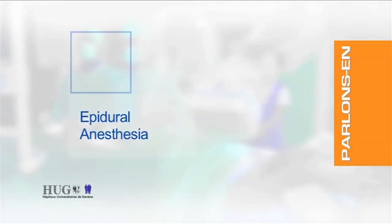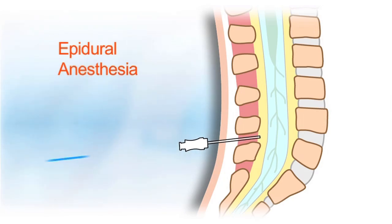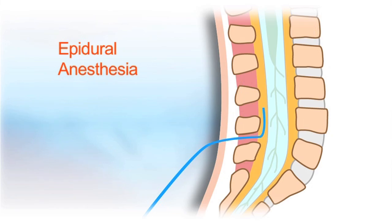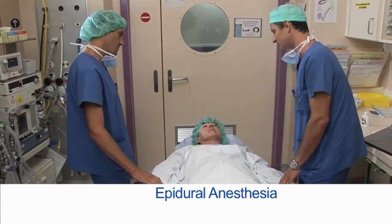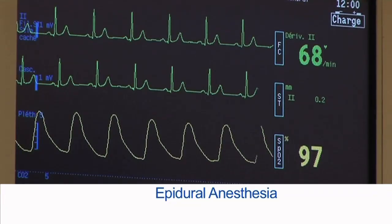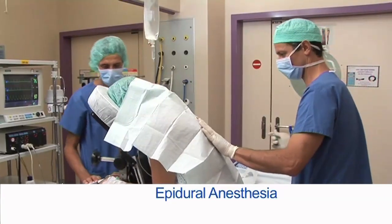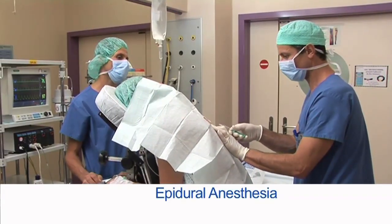In epidural anaesthesia, a local anaesthetic is injected into the epidural space. A very thin flexible tube known as a catheter is inserted through a needle, which is then withdrawn. The catheter remains in place throughout the operation. As with all anaesthesia, the anaesthesiologist and nurse anaesthetist begin by installing an intravenous device (IV), monitoring heart rate, blood pressure, and breathing. Then the anaesthesiologist applies a local anaesthesia to prepare the injection area.